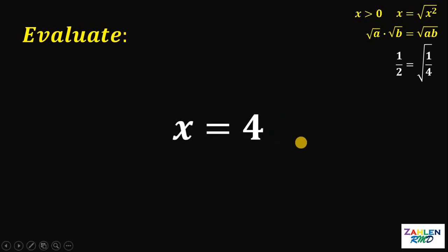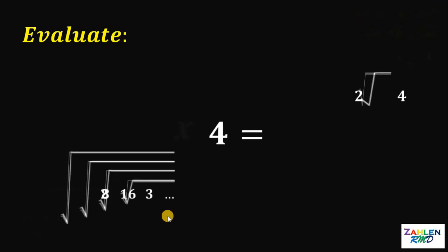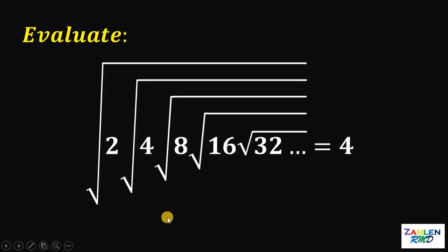We know from the start that we let x equal square root of 2 times square root of 4 times square root of 8 times square root of 16 times square root of 32, and so on and so forth. Therefore, this expression is equivalent to 4. And as always, we are done.